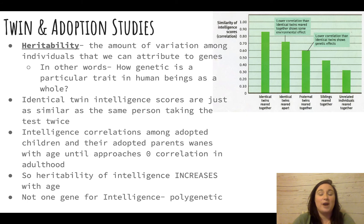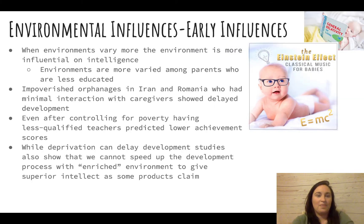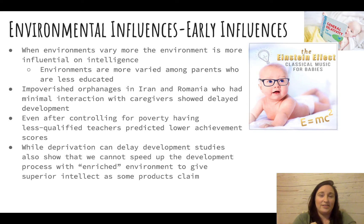What researchers found is that heritability increases as we age — we become more like our biological parents in terms of intelligence over time. It's also important to note that intelligence is not controlled by a single gene. It is polygenic, meaning many genes are involved. Environmental influences are therefore very important.